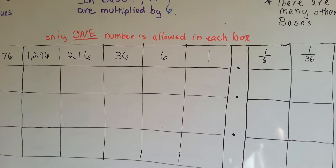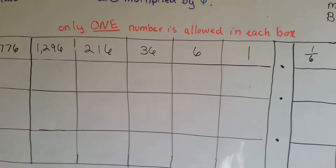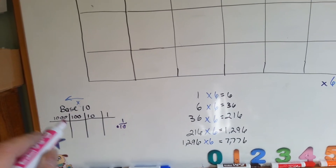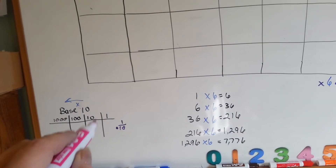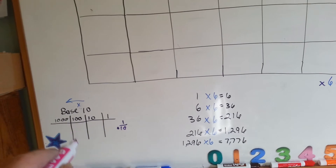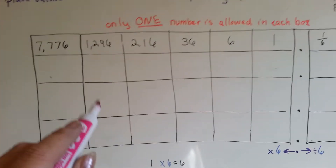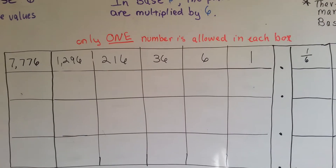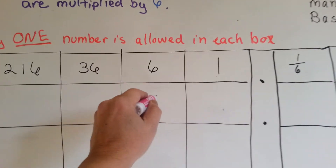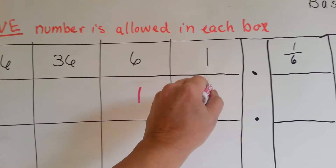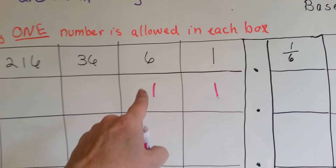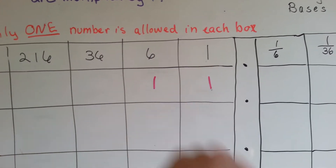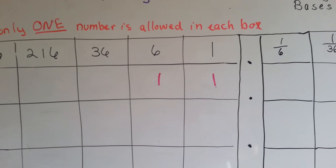You're only allowed to put one number in each box, just like in our base 10, you're only allowed to put one number in each place value. So if you wanted to say the number 7, you would write it as a 1 and a 1, because you'd have a 6 plus a 1, which makes 7.